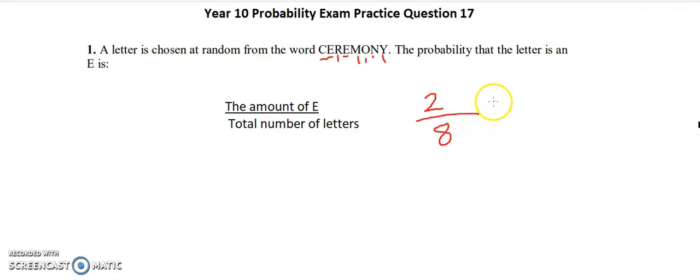Eight letters, which means the probability that the letter is E will be one quarter because I can divide two and eight by two.